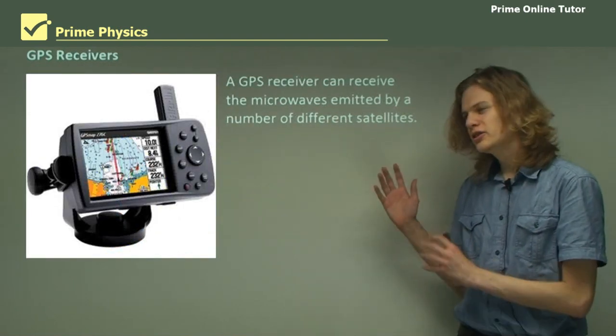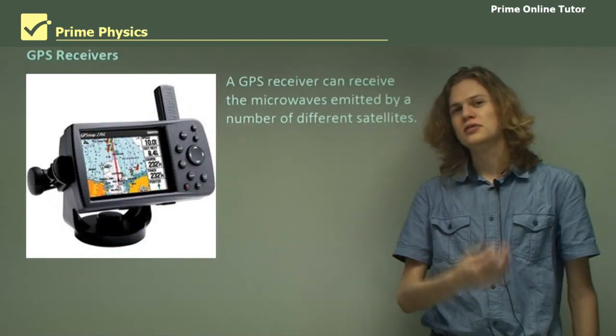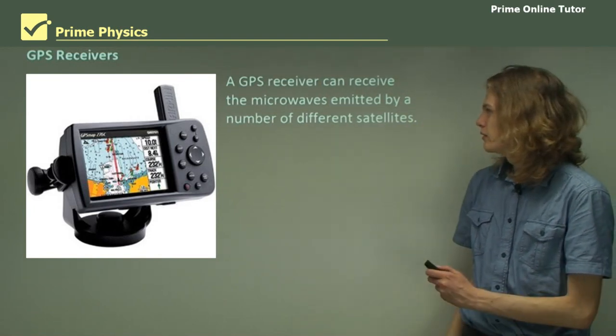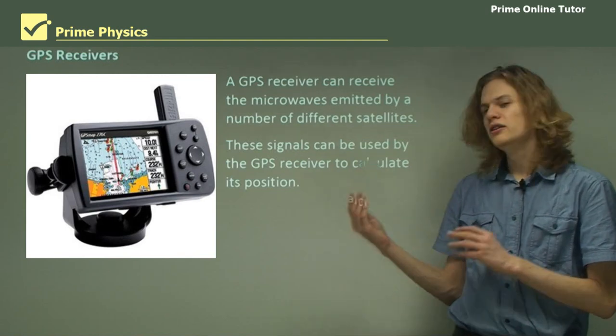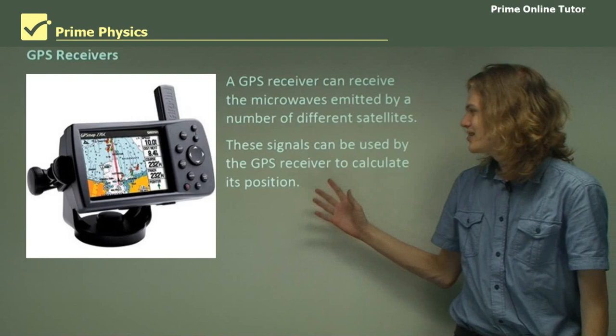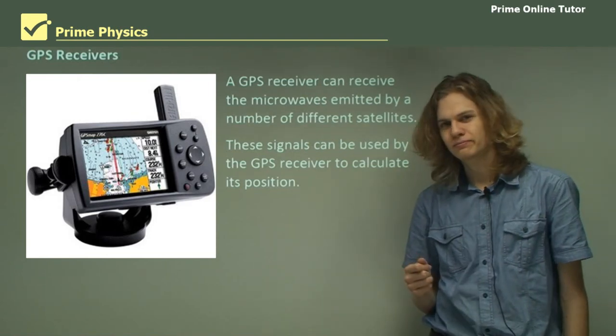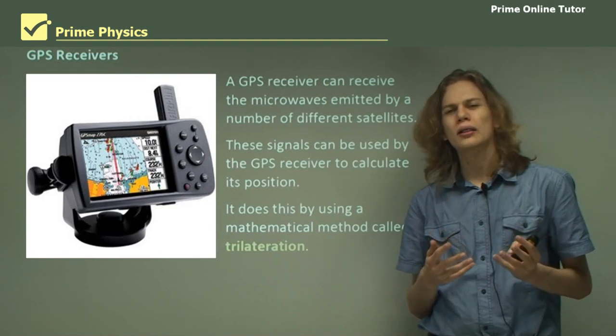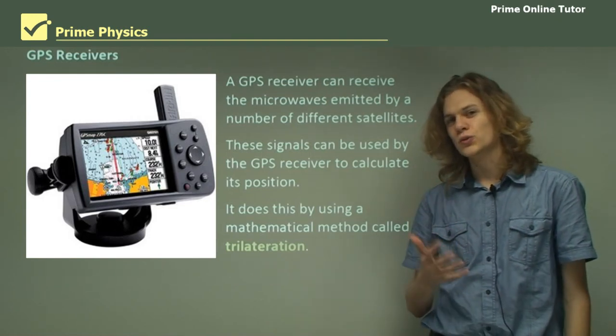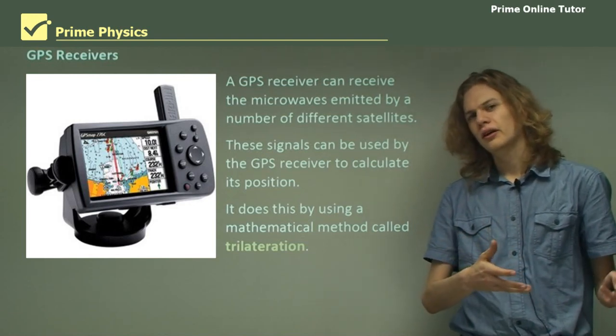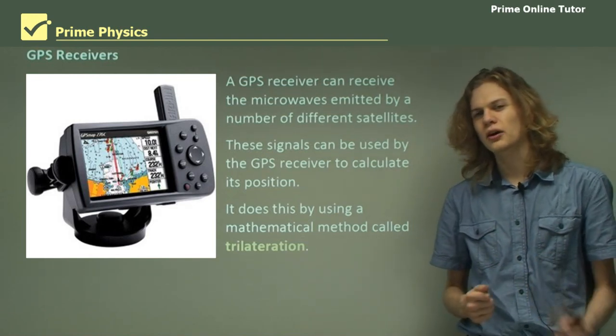Now a GPS receiver can receive these microwaves that the satellites are sending out. If it receives signals from different satellites, it's able to figure out its position. It does this with something called trilateration. In order to use trilateration, it needs to be able to decode the time signals sent by each satellite.